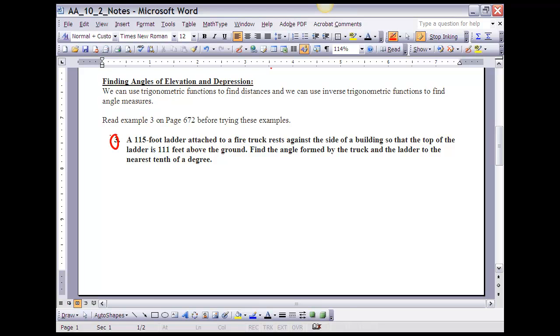It says, A 115-foot ladder attached to a fire truck rests against the side of the building, so that the top of the ladder is 111 feet above the ground. Find the angle formed by the truck and the ladder to the nearest tenth of a degree. So, I did a little drawing here, the building 111 feet, the ladder is 115 feet. We're looking for this angle right here, I'll call that theta. If I'm going to do that, if I look at this side and this side, the two that I know in relation to theta, this is the opposite side, and this is the hypotenuse. And,